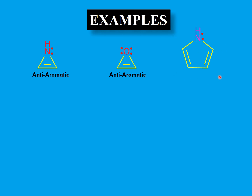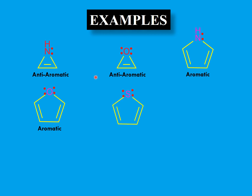Pyrrole is a five-membered ring with nitrogen having a lone pair. The lone pair conjugates with the two double bonds, giving six electrons in conjugation total, making the molecule planar and aromatic. Furan (oxygen in the ring) also has one lone pair involved in conjugation alongside two double bonds, giving six electrons — a Hückel number — making furan aromatic. Thiophene, with sulfur in the ring, behaves the same way and is also aromatic.